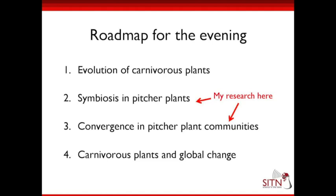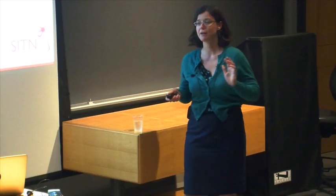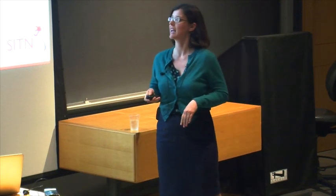Our roadmap for the evening: first we're going to talk about the evolution of carnivorous plants, then we'll talk about symbiosis in pitcher plants, which are a type of carnivorous plant, then we'll talk about convergence in pitcher plant communities, and finally a short bit on carnivorous plants and global change. If you're not familiar with some of these terms, that's fine — we'll go into them more when we get to those sections. My research will be in the second and third parts of the talk.